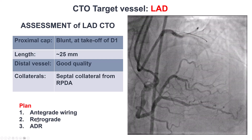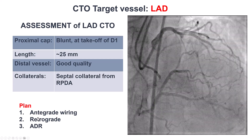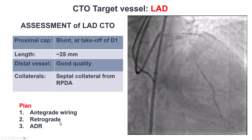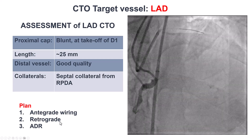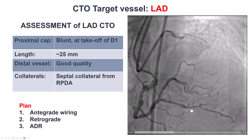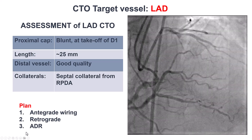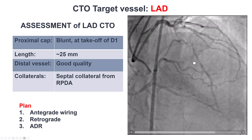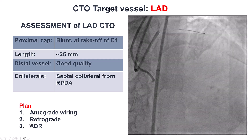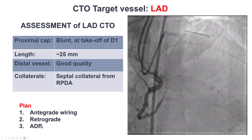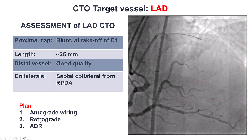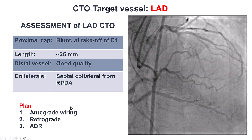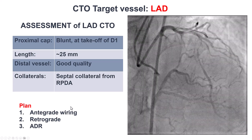The plan was to start with antegrade wiring attempts. If that failed, to go retrograde because of the large good septal collaterals. And if that failed, use antegrade intimal reentry. When it comes to LAD CTO, it may actually be best to use retrograde to minimize any potential side branch loss.